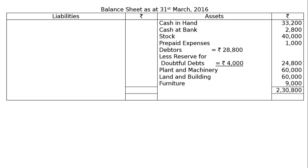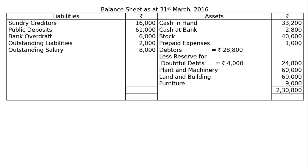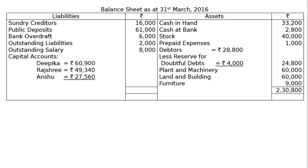Total of the asset side is Rs. 2,30,800. Liabilities side: sundry creditors Rs. 16,000, public deposits Rs. 61,000, bank overdraft Rs. 6,000, outstanding liabilities Rs. 2,000, outstanding salary Rs. 8,000. Capital accounts: Deepika Rs. 60,900, Rajshri Rs. 49,340, Anshu Rs. 27,560, totalling Rs. 1,37,800. Total of liabilities side is Rs. 2,30,800, matching the asset side — answer is correct.